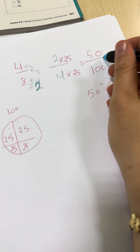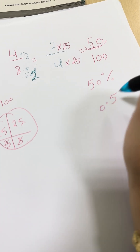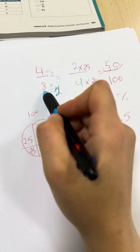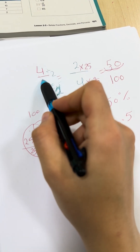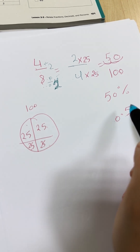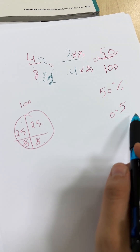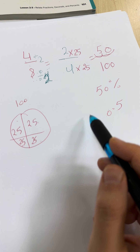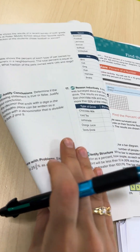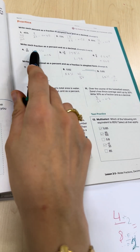For the decimal, move two steps to the left: 0.5. We can also do it mentally because 4 is half of 8, so it equals 50 over 100 and equals 0.5 — it's half. So basically this is our lesson. All the examples are the same: how to write a number as a decimal, fraction, and percent. Thank you.